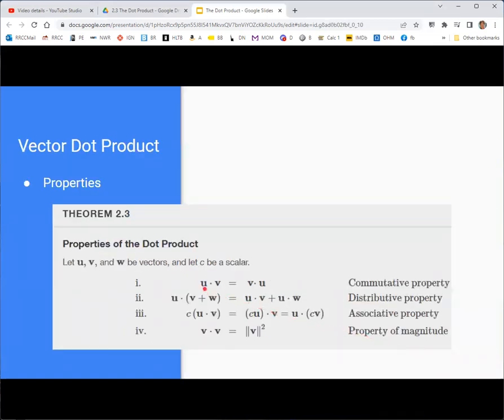Now, the vector dot product is commutative, it is distributive with a vector sum or difference, it is associative with scalar multiplication, and if you do the dot product of a vector with itself, it's equal to the square of the magnitude of that vector.